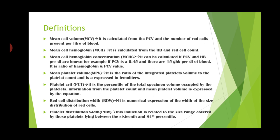For example, if PCV is 0.45 and there are 15 grams HB per dL of blood, then find out the MCHC by using the hemoglobin and PCV ratio. Next, Mean Platelet Volume, that is MPV. It is the ratio of the integrated platelet volume to the platelet count, and it is expressed in femoliters.